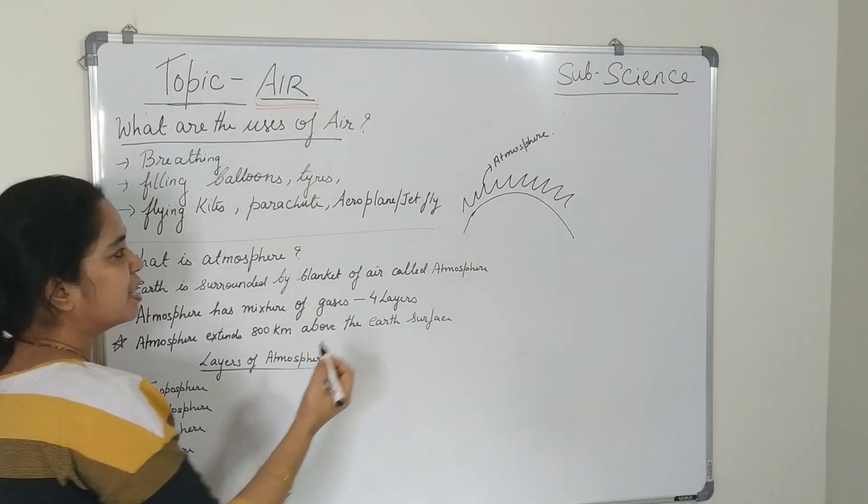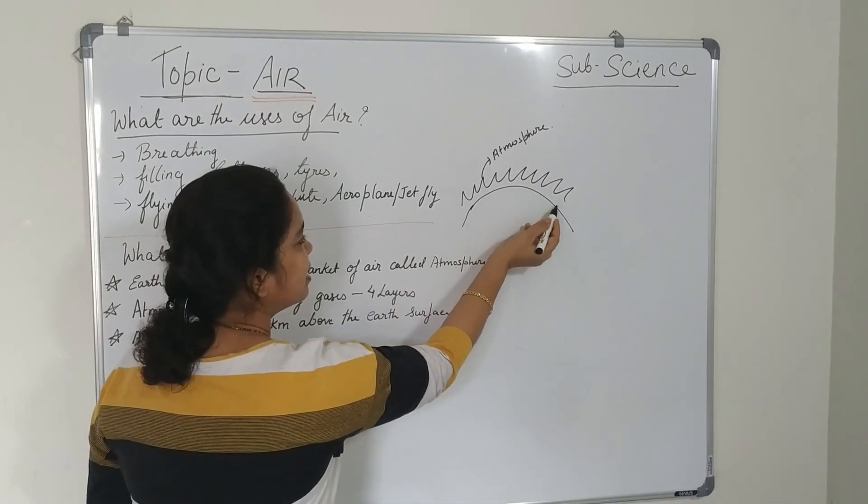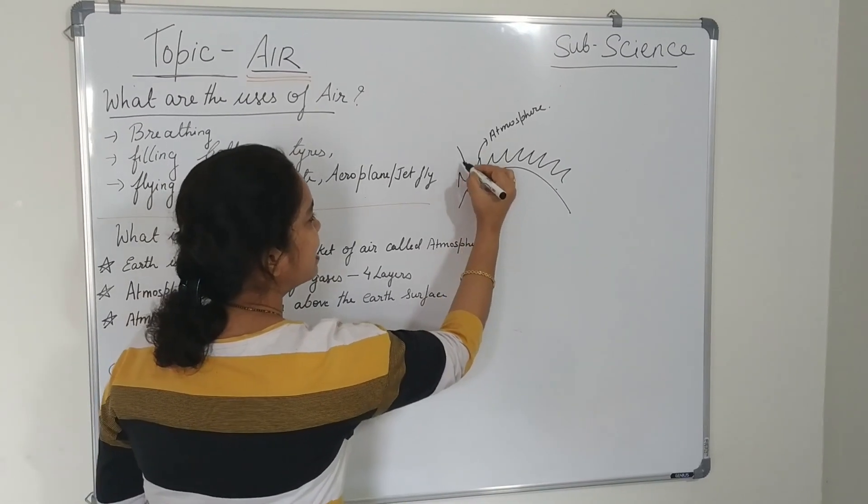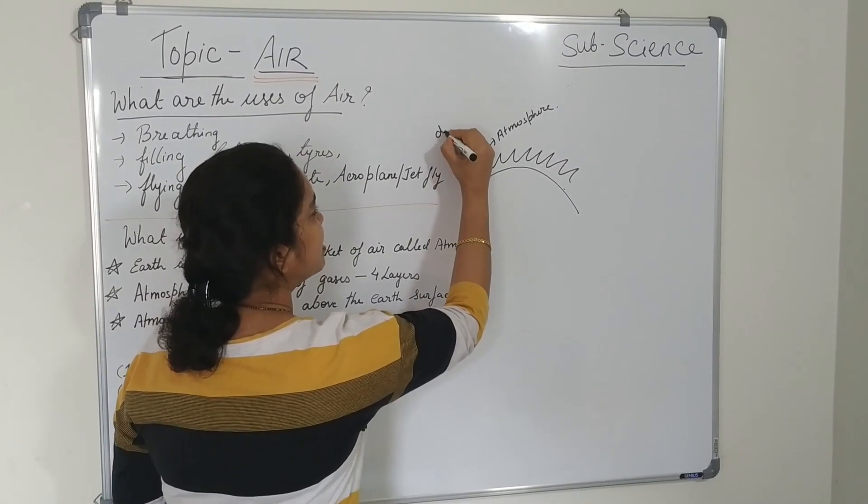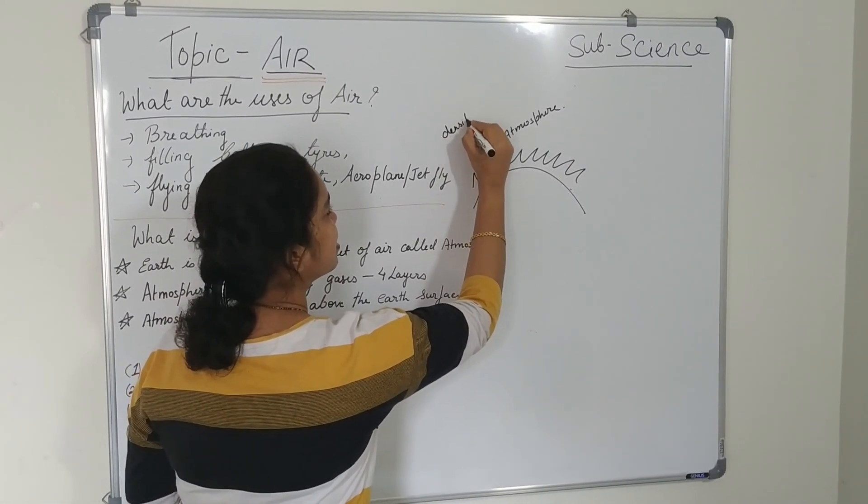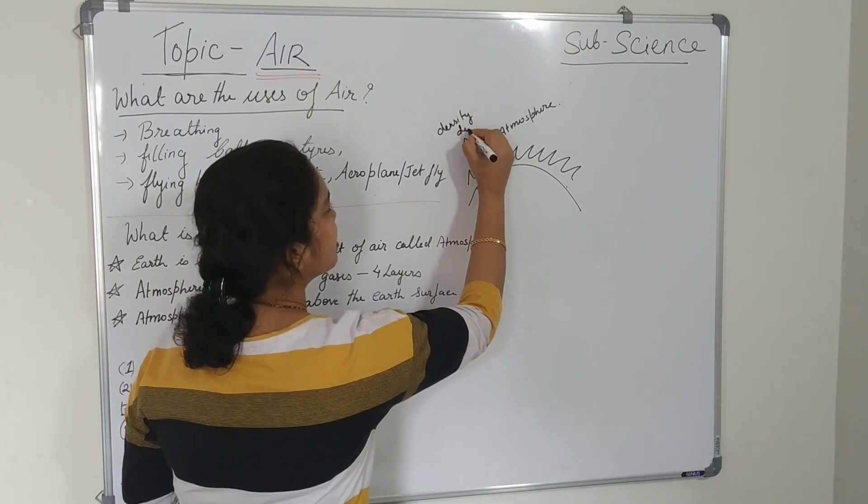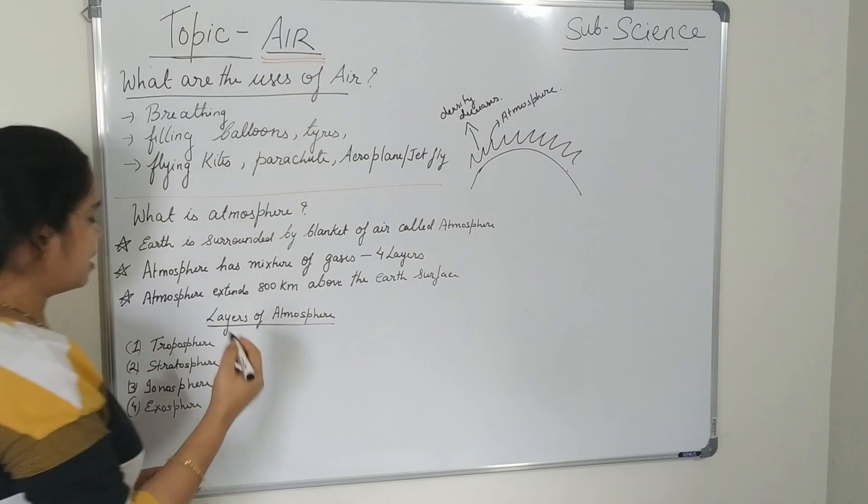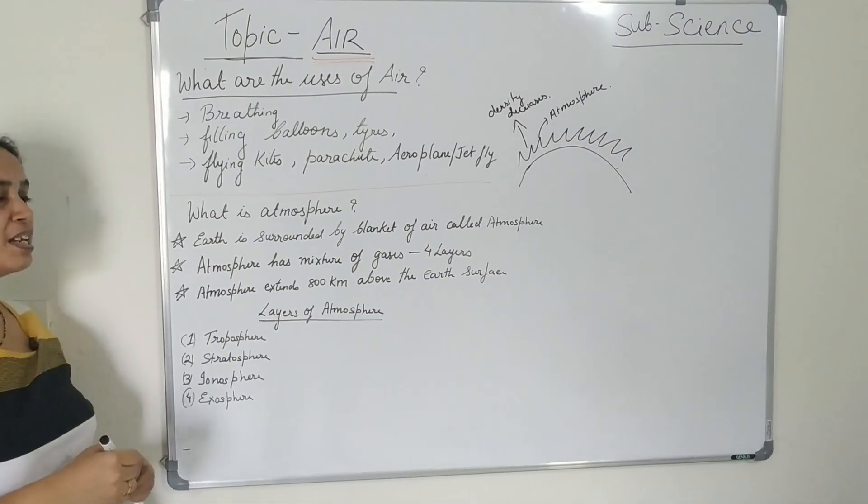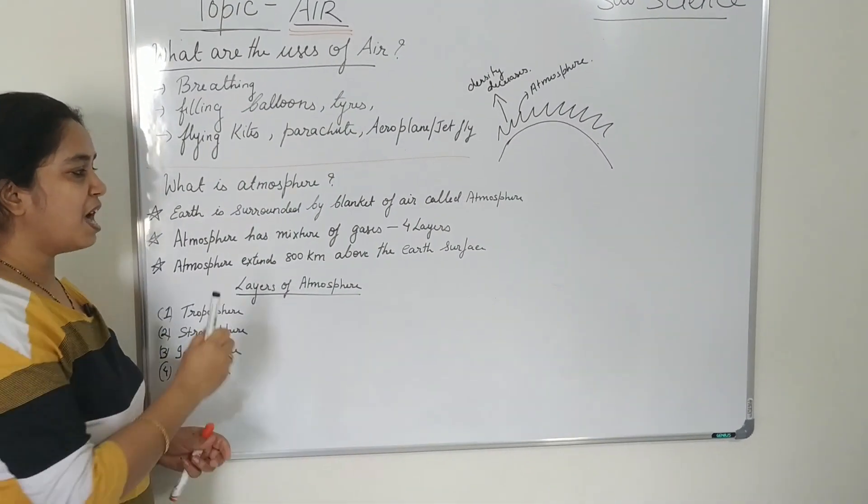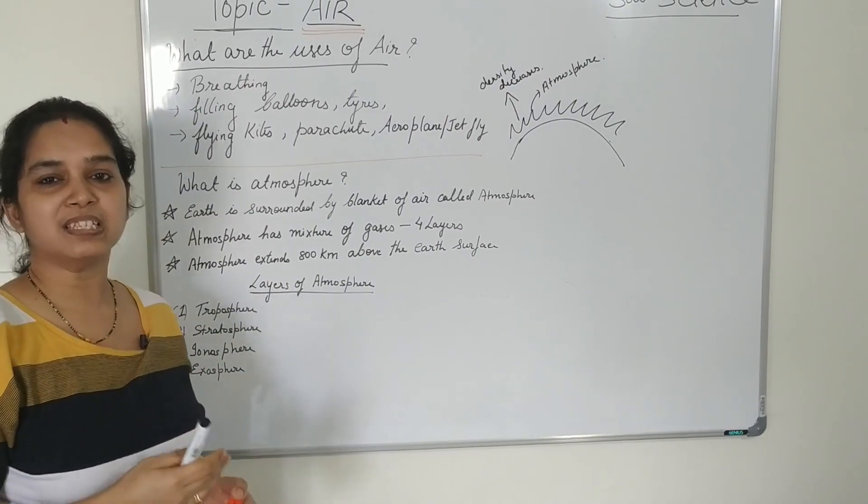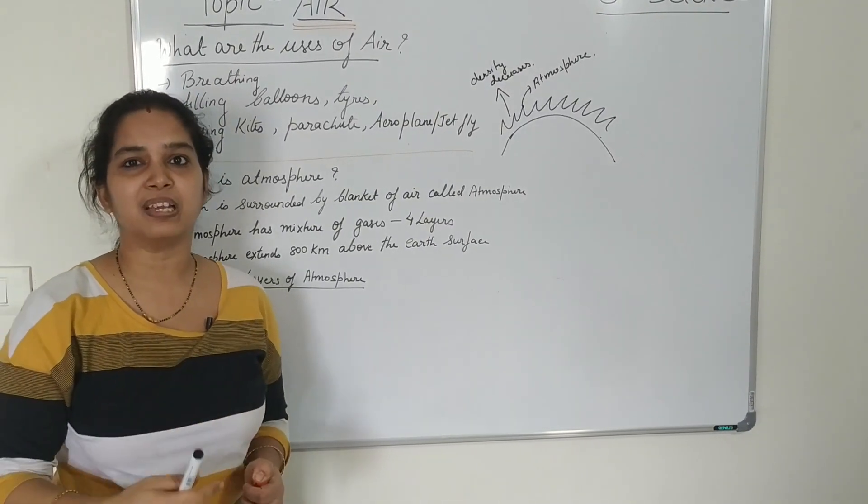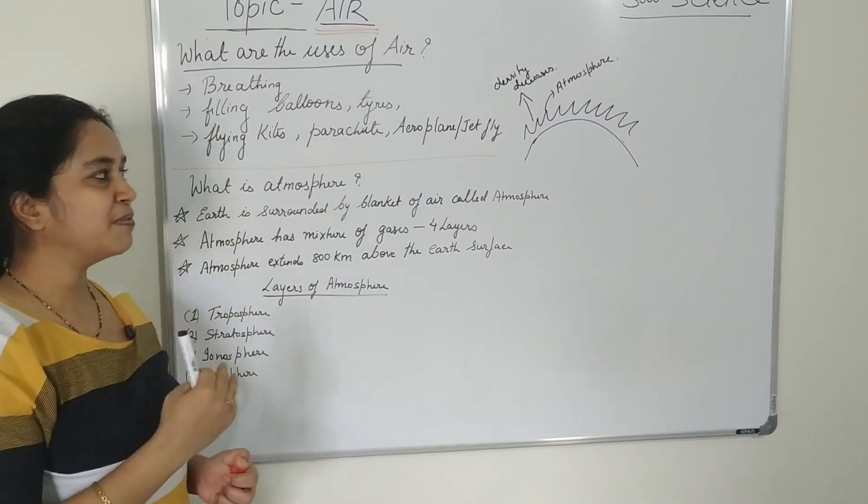The air is very denser near the earth's surface and the density decreases. The density decreases as we go up. So atmosphere has a mixture of gases and the mixture of gases is present in the four layers above the earth's surface.